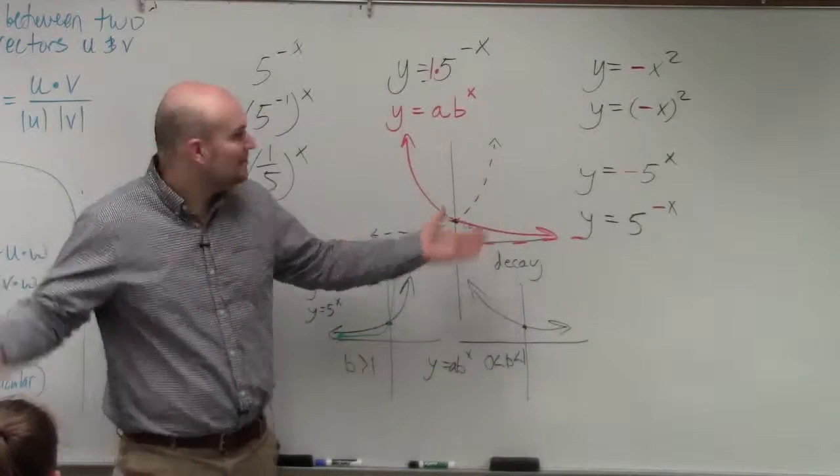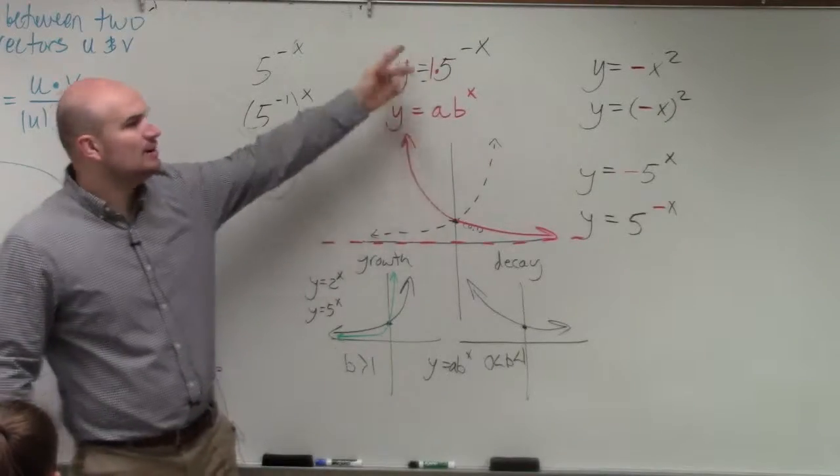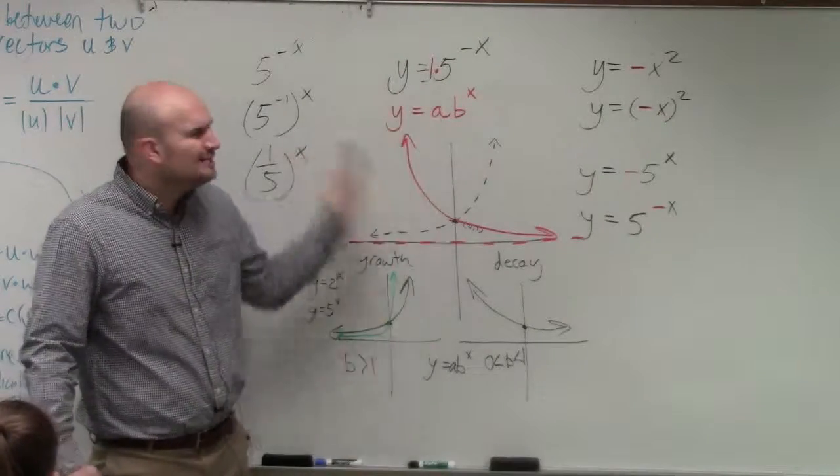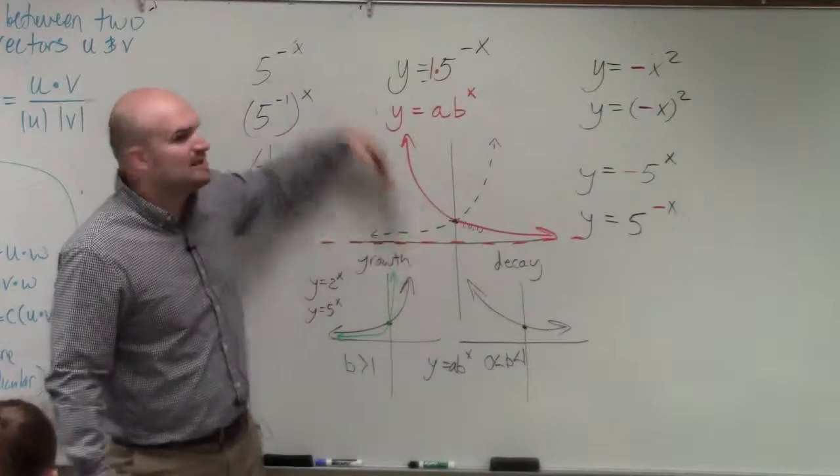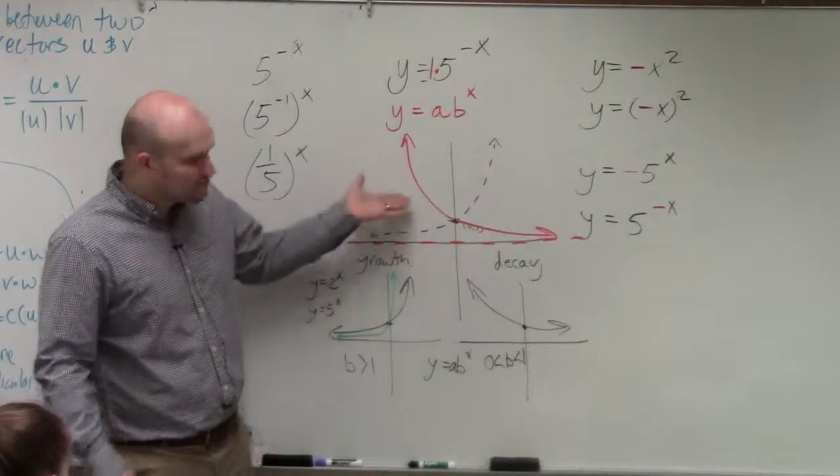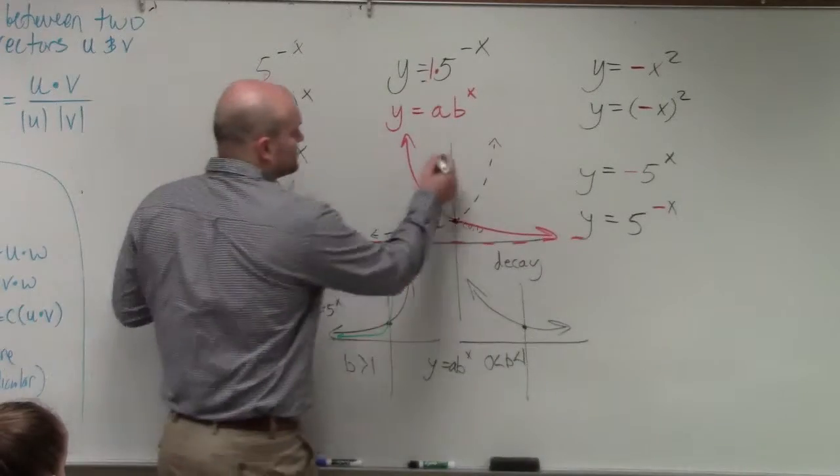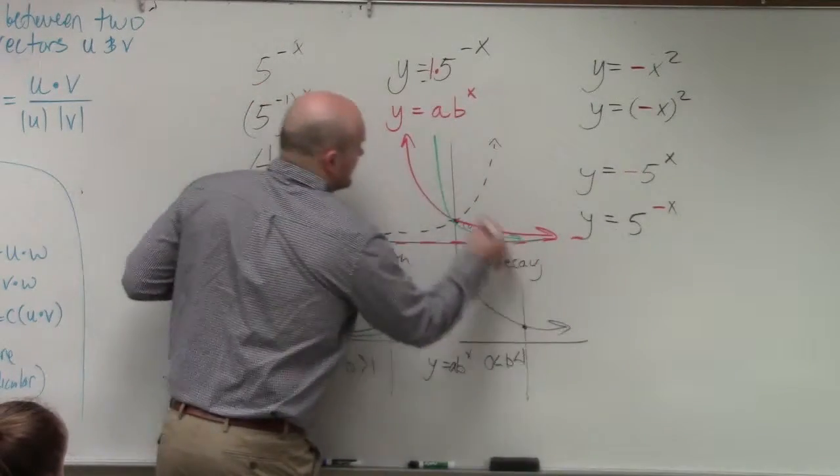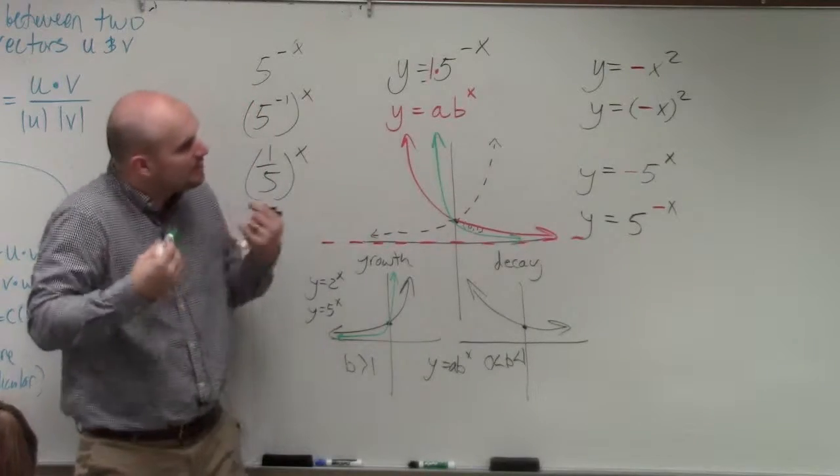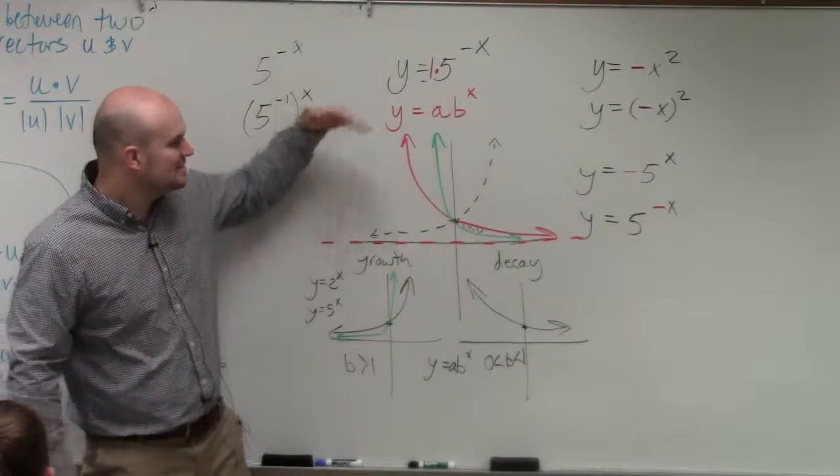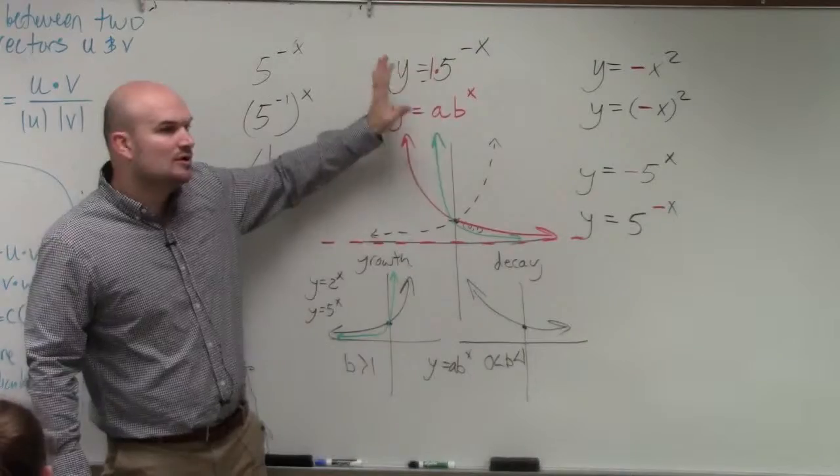You could just create a table, right? Plug in negative 1, plug in 1, and you could create your own graph. But I didn't want you guys to get that detailed. I just wanted you to sketch using one point based on what the graph looks like. So does this graph look like this? I don't know. Maybe not. Maybe it looks more like this. You know? I mean, I didn't need you guys to be exact.